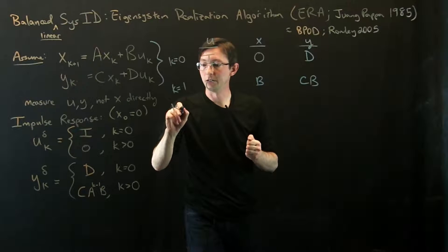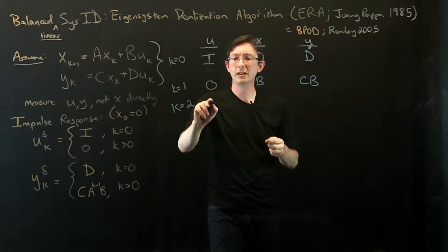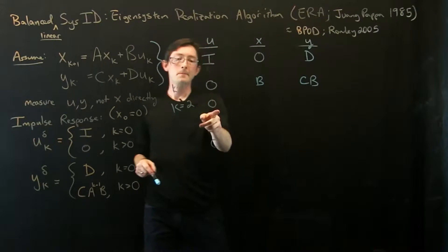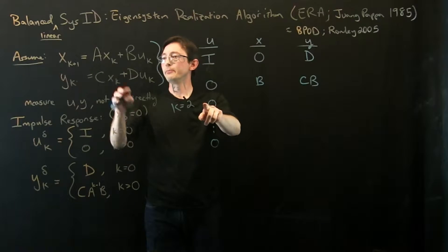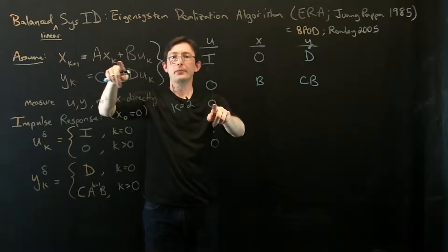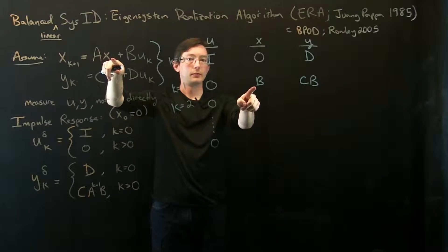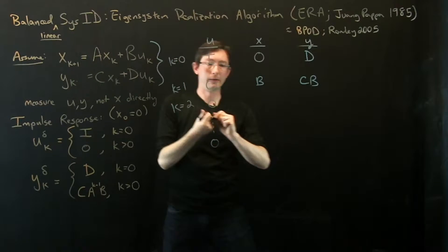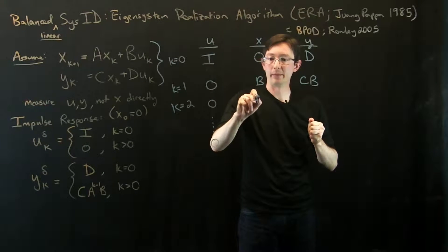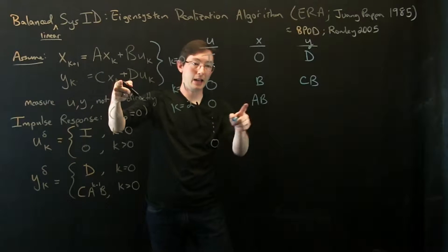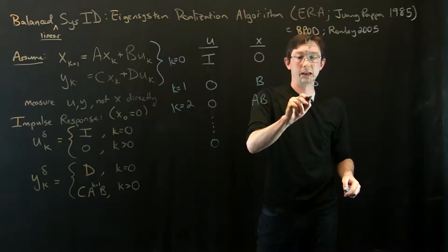So now what at k2? Again, u is going to be 0 for all time now, zero. It's always 0. At k2, this is 0. And x2 is A times x1. x1 is B, so it's A times B. And then, again, all I'm doing at time 2 is I'm measuring A times B. So y is CAB.